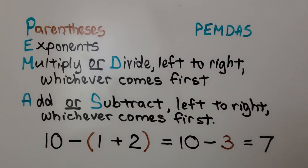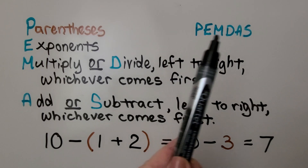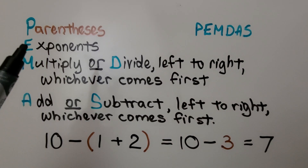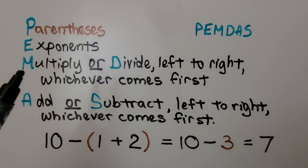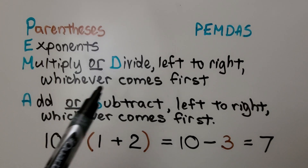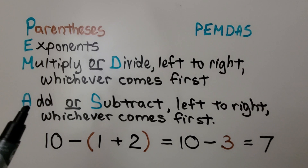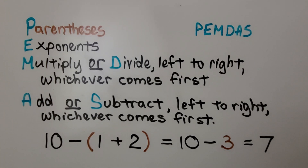You should remember the order of operations from the beginning of 5th grade math. We can remember it as PEMDAS: parentheses, then exponents, then we multiply or divide left to right whichever comes first, then we add or subtract left to right whichever comes first.